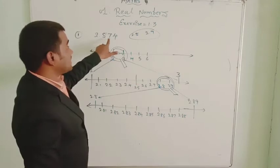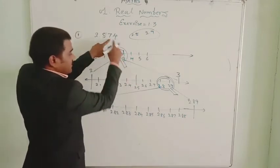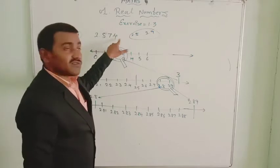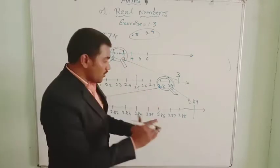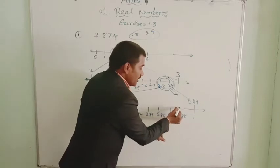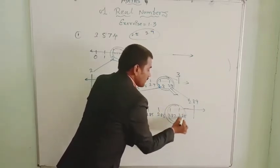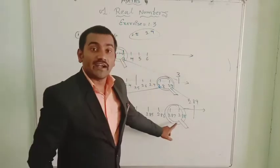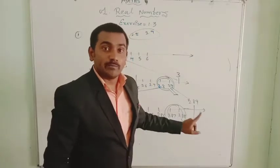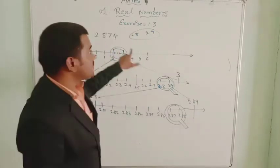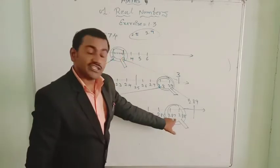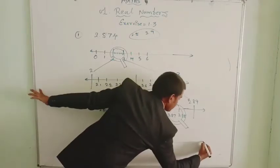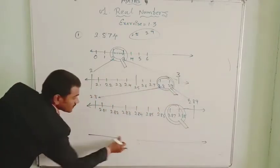We see that 2.87 is here, and after 87 there is a 4. So 2.874 lies between 2.87 and 2.88. We need to close in on these two numbers.